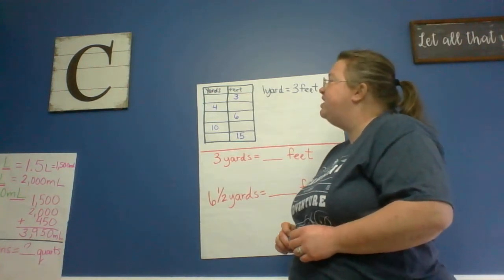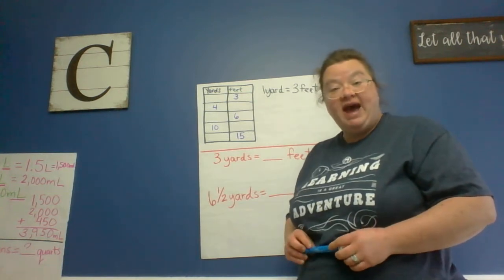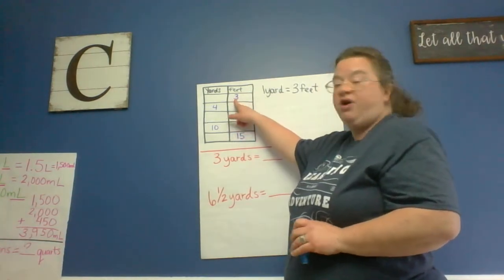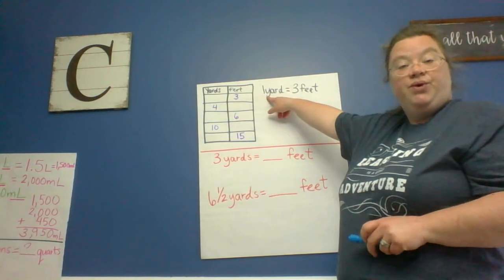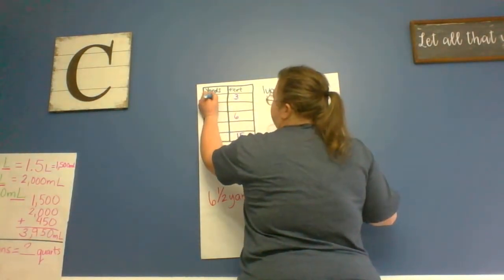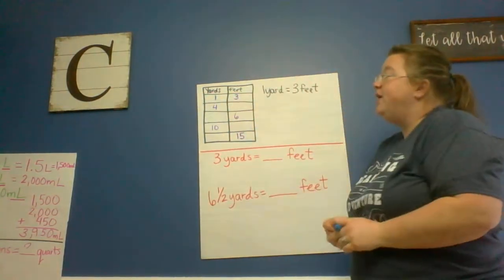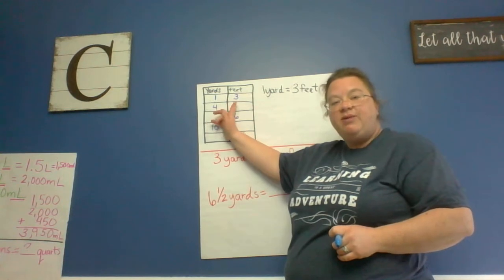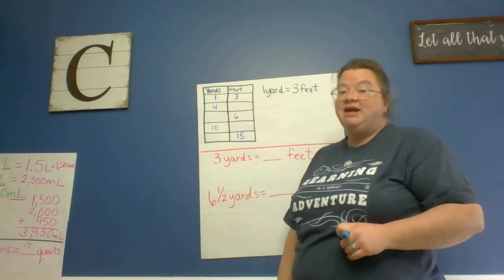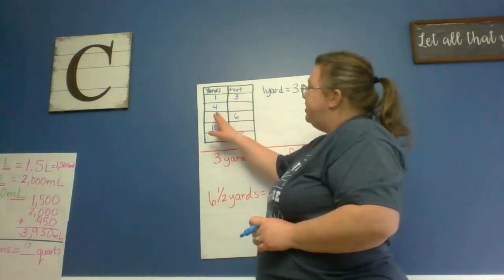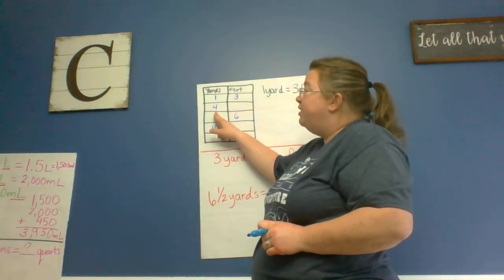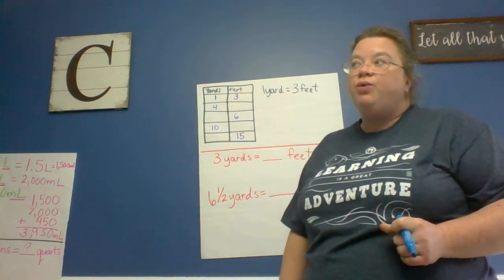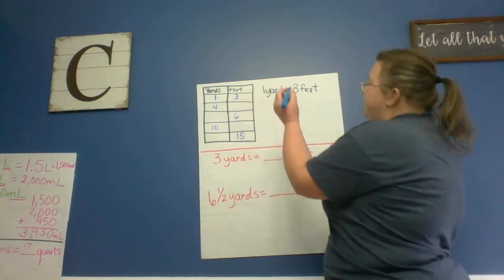Looking at our chart, we need to figure out if we are given the number of feet, how many yards do we have? And if we're given the number of yards, how many feet do we have? So looking here, we already know that three feet is equal to one yard. So I'm going to go ahead and fill that in right there. And what we want to start noticing is some kind of a relationship between the numbers here. Is there anything we can multiply or divide by every time to get the other number? So let's look at our next one. We have four yards. How many feet would that be? Think about that for a minute. How many feet is in one yard? Three. And if I have four of those, four yards, so four times three feet, I'm going to get 12.